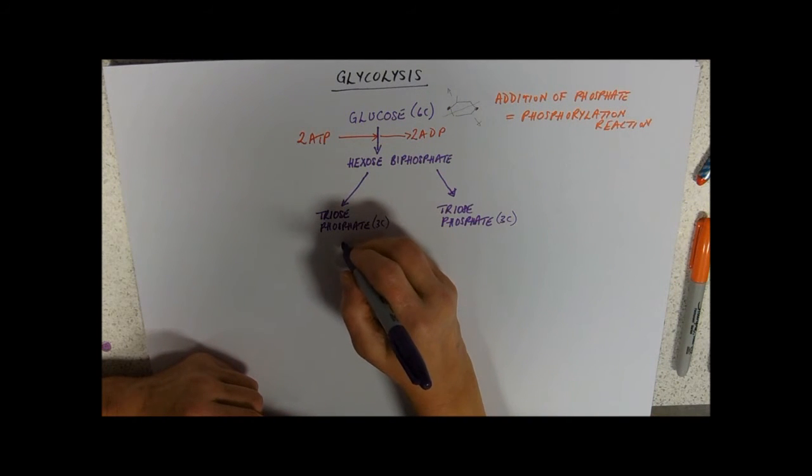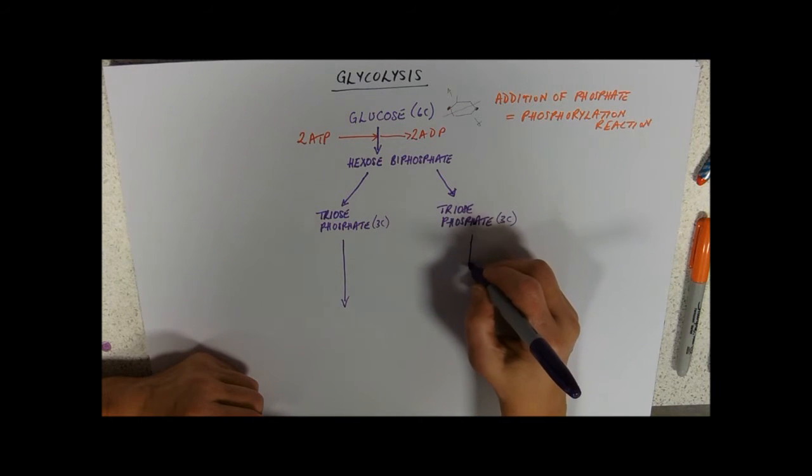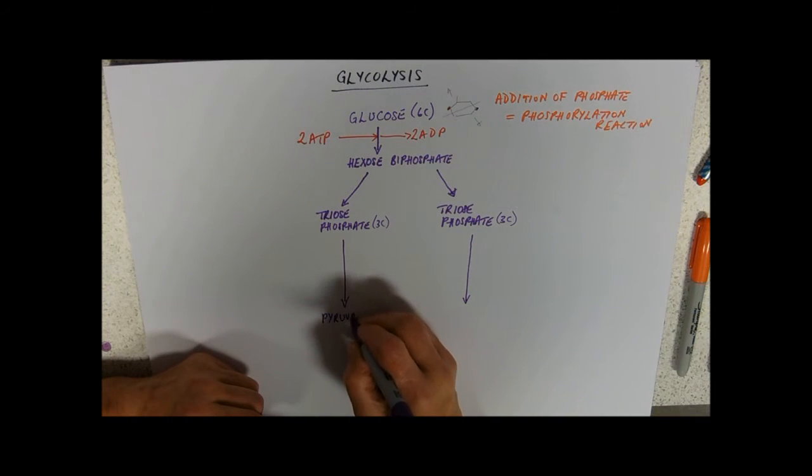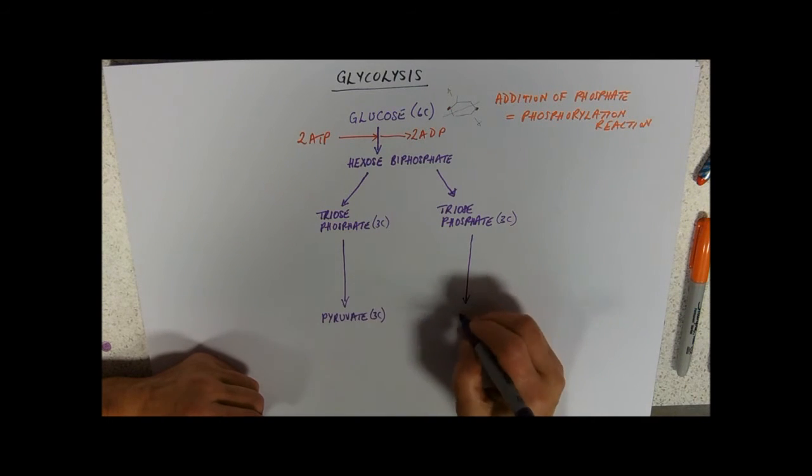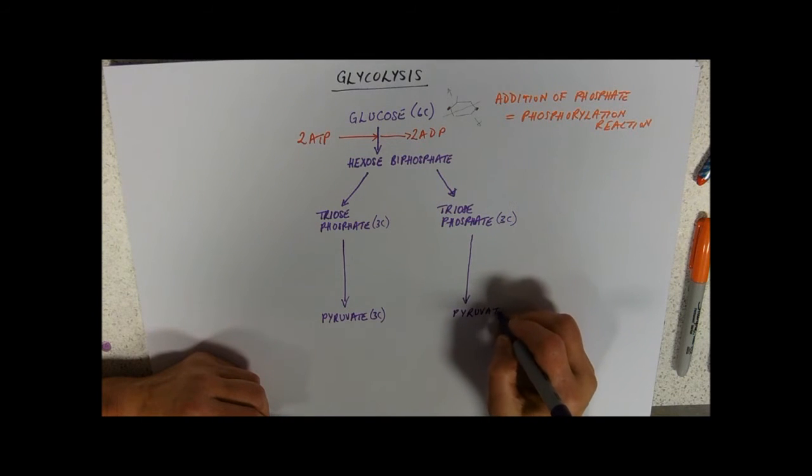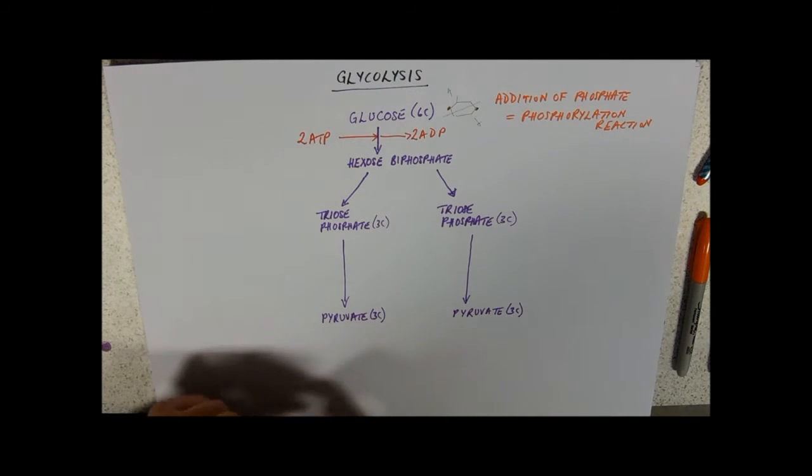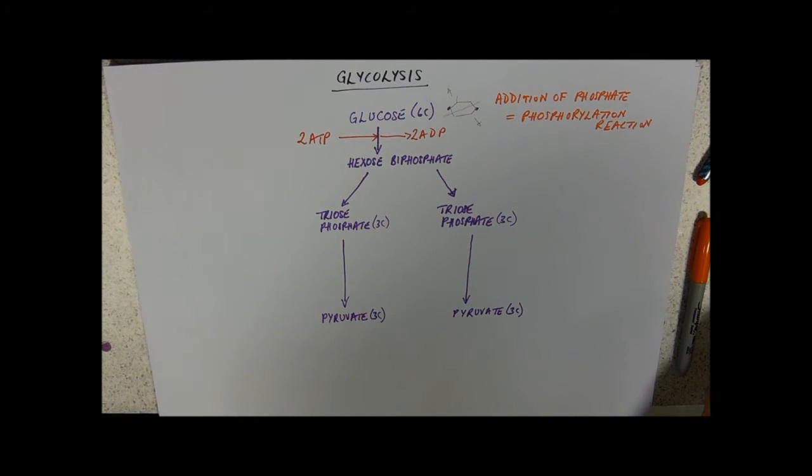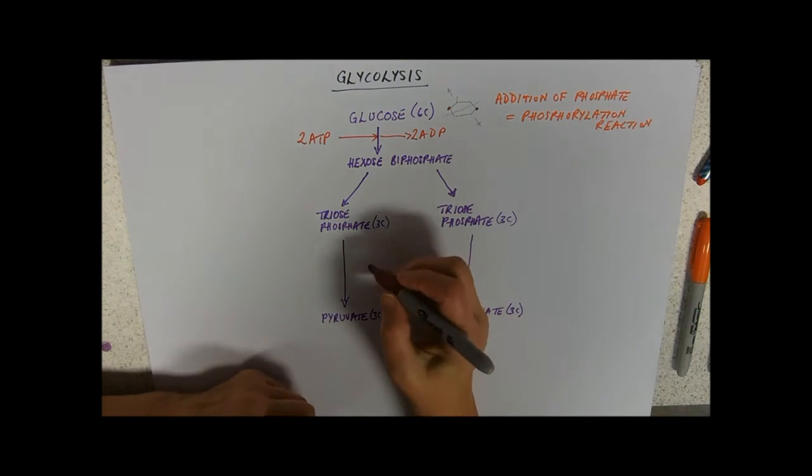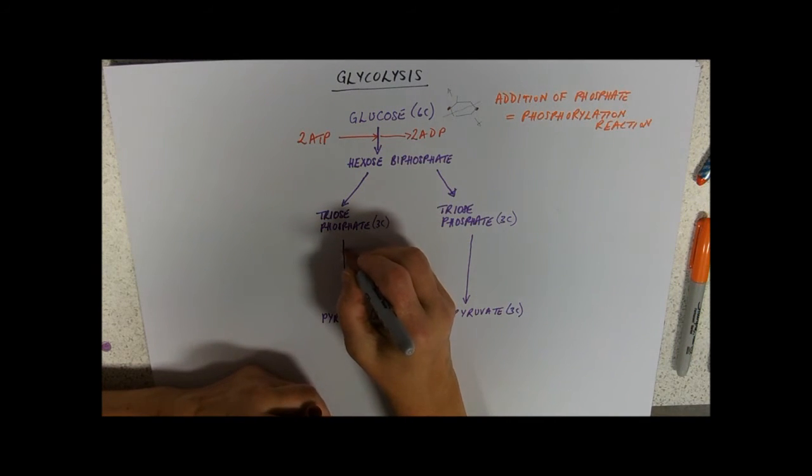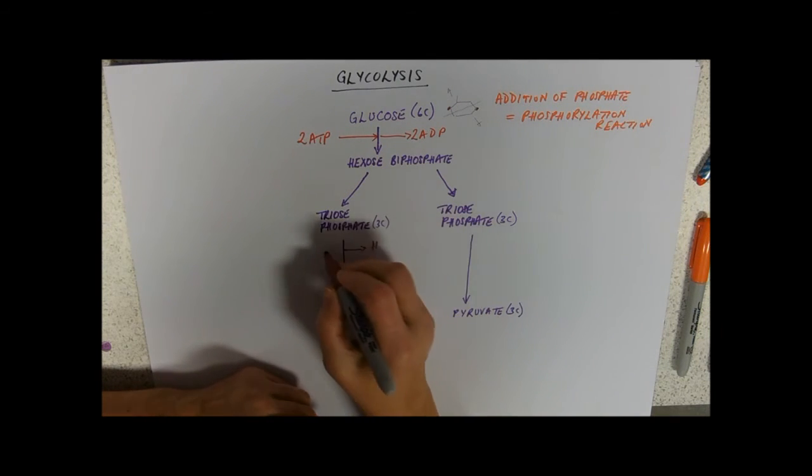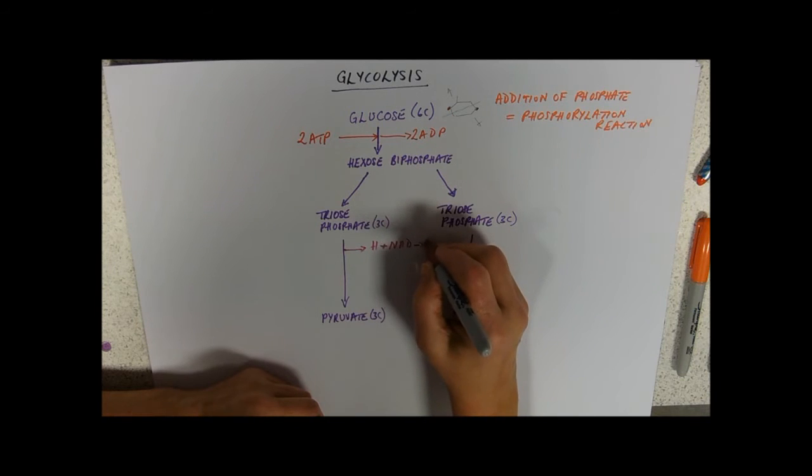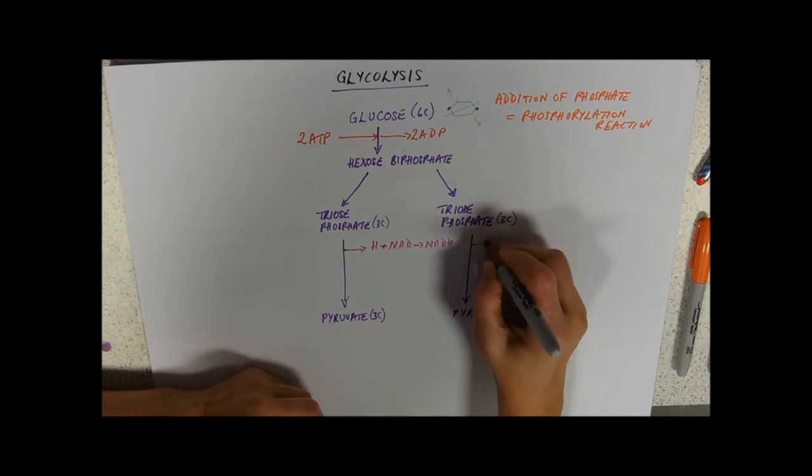And then we've got a couple of things going on. So we're going to make our triose phosphate into pyruvate, which also has three carbons. So we're not taking any carbon away. But in order to make triose phosphate into pyruvate, what we do need to do is to take away a hydrogen. So from each one of these triose phosphates, we're going to remove a hydrogen, and we're going to pass it to NAD to make NADH each. And we're going to do that to each of them.